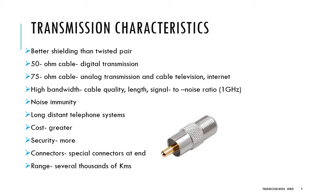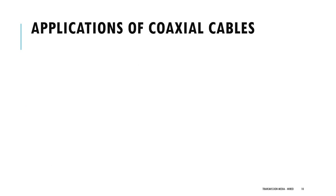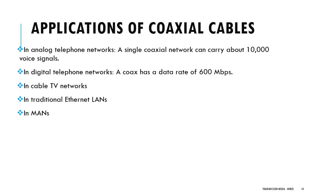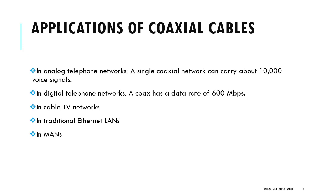Some special connectors are shown in the figure used to connect coaxial cables. Applications of coaxial cables: they are normally used in analog and digital telephone networks. They can be used in cable TV network transmission, and in traditional Ethernet LANs coaxial cables are used for connectivity. Even metropolitan area networks are connected using coaxial cable.